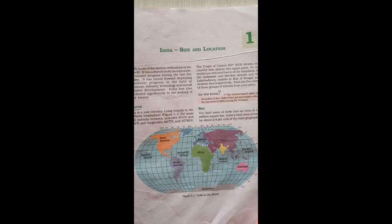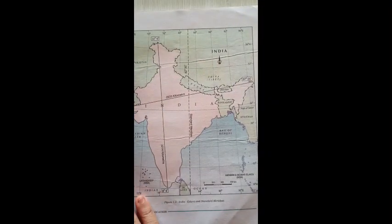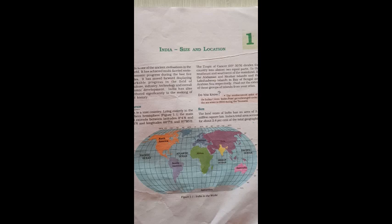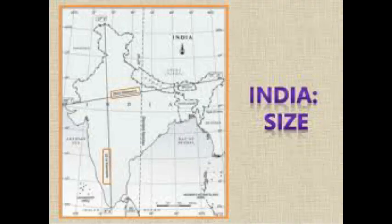Now let us study about the size of India. The land mass of India has an area of 3.28 million square kilometers. India's total area accounts for about 2.4 percent of the total geographic area of the world, making India the seventh largest country in the world.